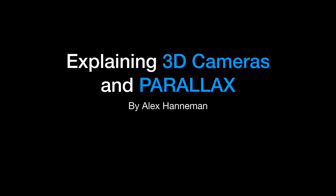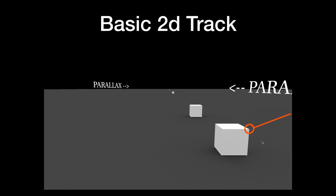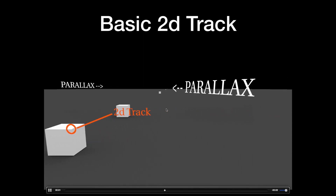Welcome to the first lesson on 3D cameras and parallax. Through this lesson we're going to learn about the different types of tracks you can do and how to differentiate and know which one to use in any given scenario. There are a lot of different methods, but we need to go over all of them. If you're coming through this lesson you should already know basic 2D tracking, which is just a tracker node in Nuke.